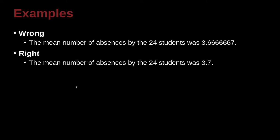The mean number of absences by the 24 students was 3.6666667. Now in this case, it's not really a hard and fast rule, it's just a kind of rule of thumb, but this number here is bigger than 10, so that's okay. We go ahead and we write the number, but what about this number here, this 3.66667? Why do we need to change that to be 7?